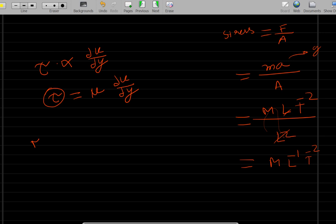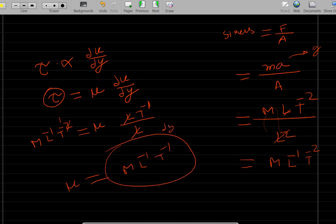This equals mu and then du/dy. Now du/dy: du is nothing but itself is velocity, velocity means meter per second, so L T^-1. And du/dy means distance, and distance means length. So this L, this L cancel out, and this T minus 1 remains. So ultimately mu is equal to M L^-1 T^-1. That will be the unit of dynamic viscosity.